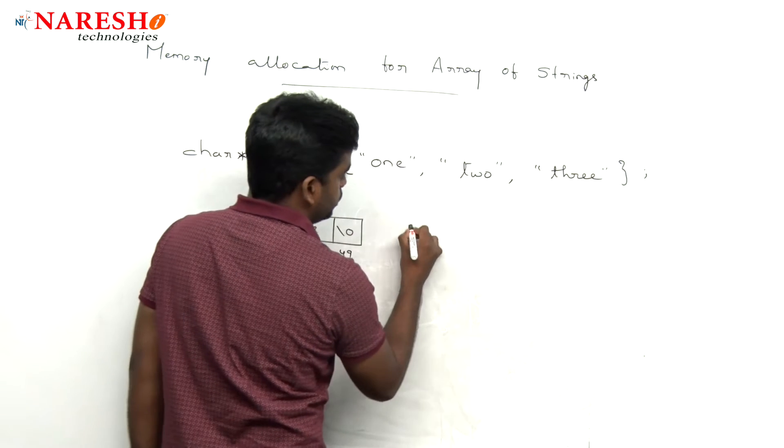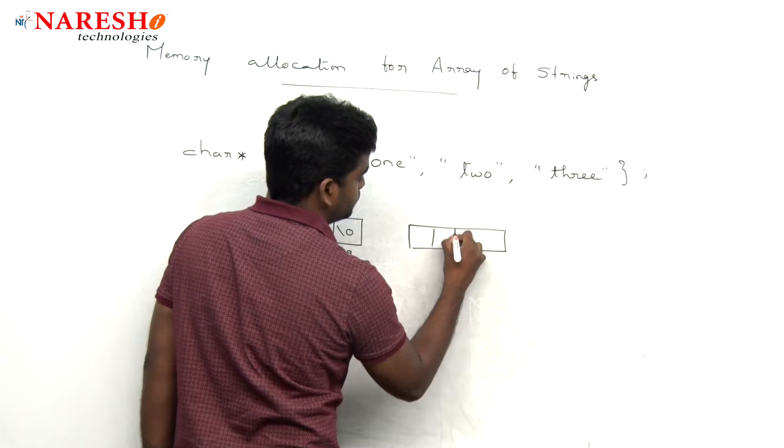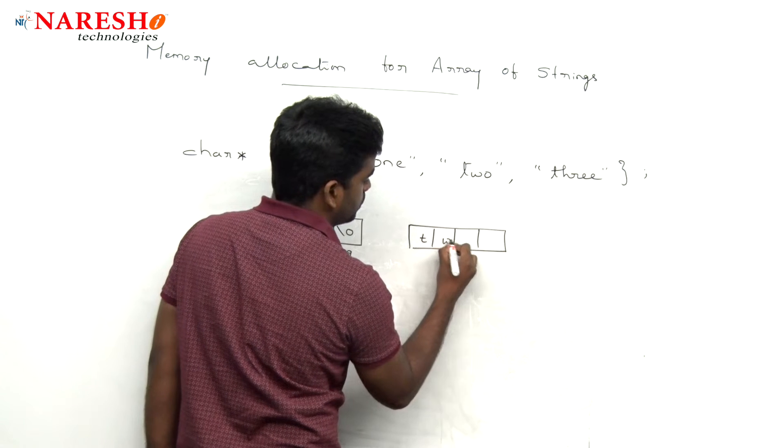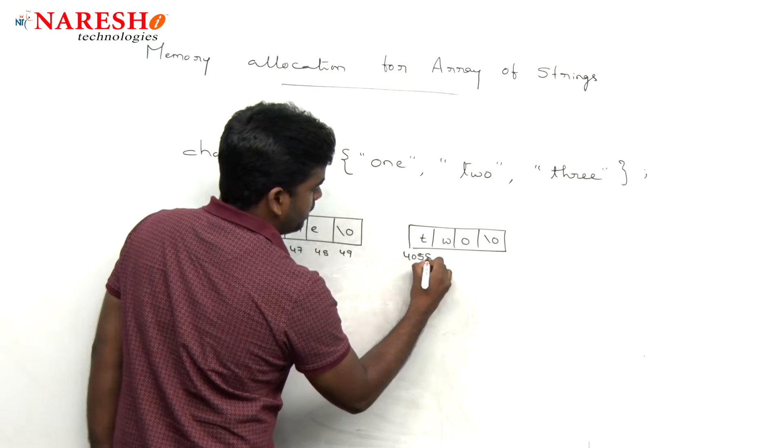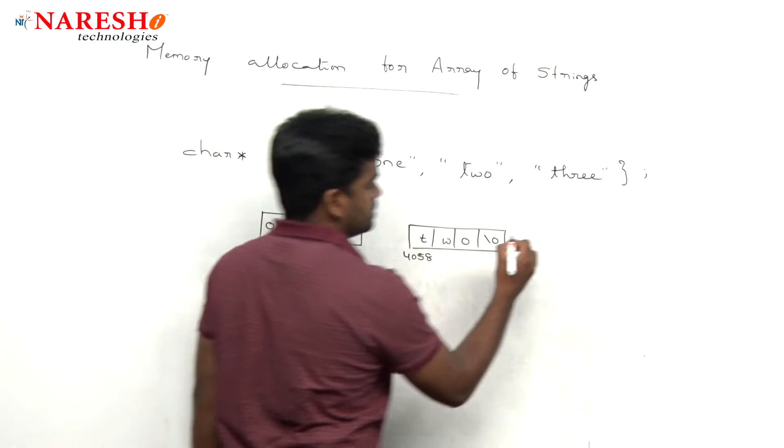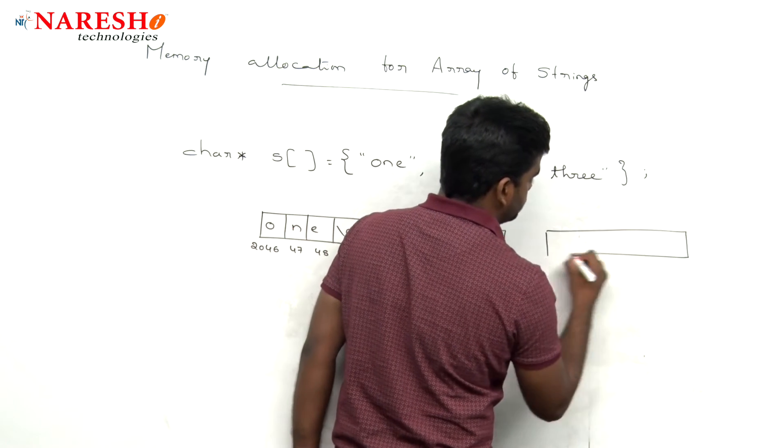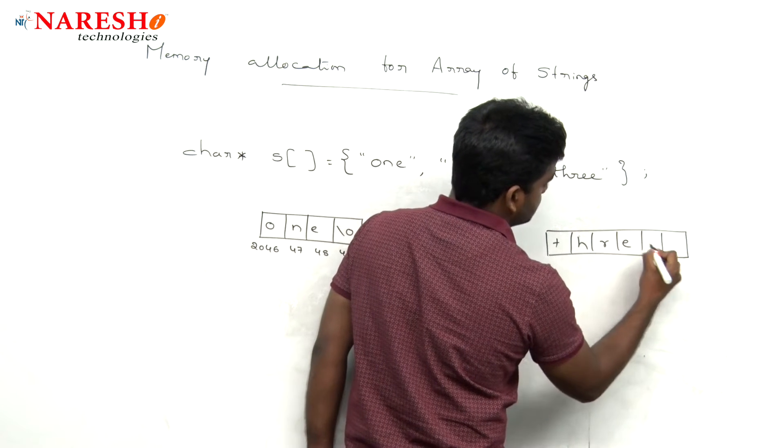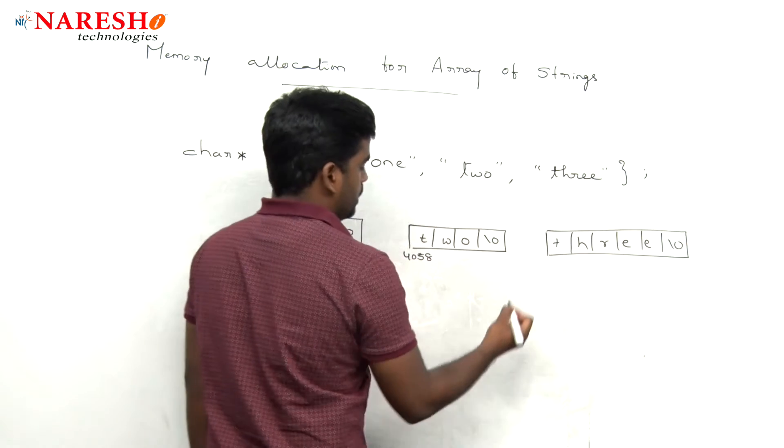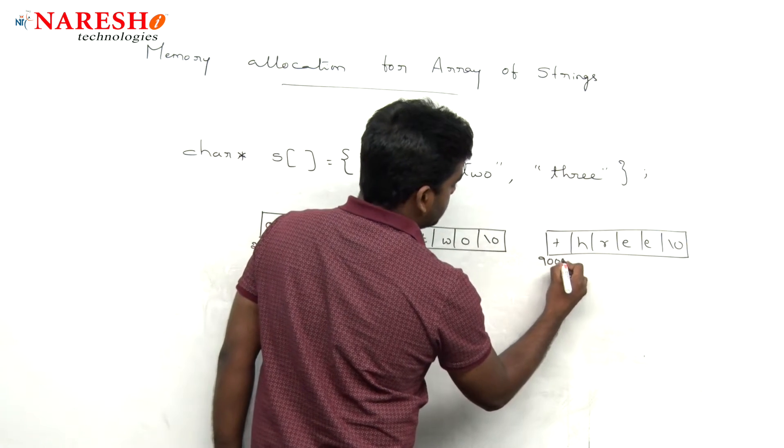And next, the second string gets memory at some another location like 4058. And the third string gets memory allocation at some location like 9002.